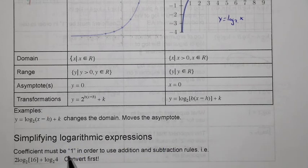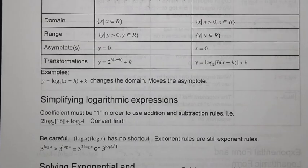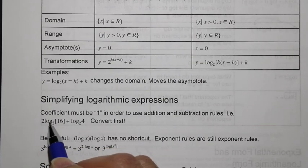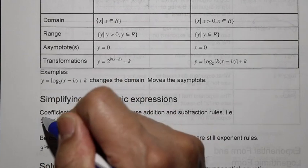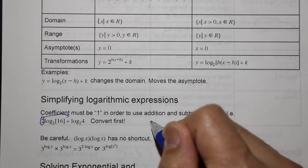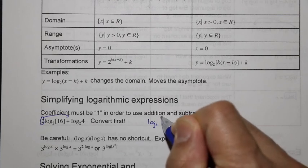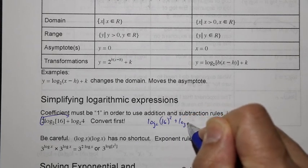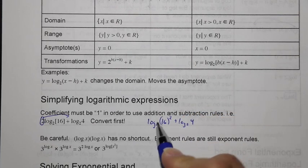Simplifying log expressions, remember that the coefficient must be 1 in order to use that addition and subtraction rule, and so you'll have to convert first. Taking a look at this, 2 log base 2 of 16, this 2 in front is an issue. We're going to have to use the power rule to bring it to an exponent in the argument. So this is log base 2 of 16^2.